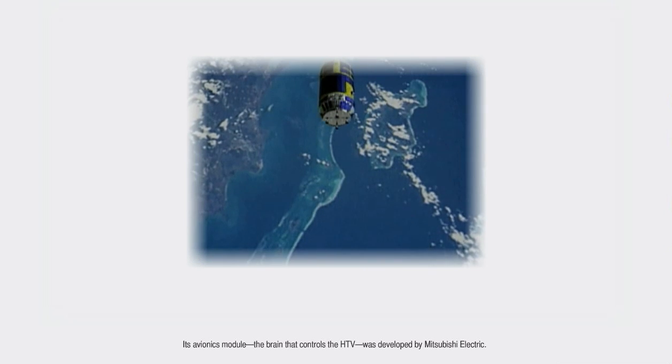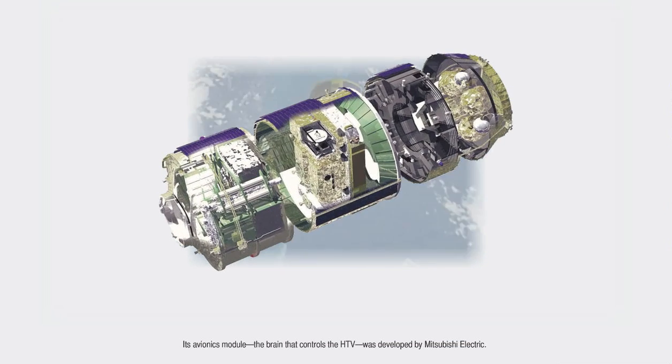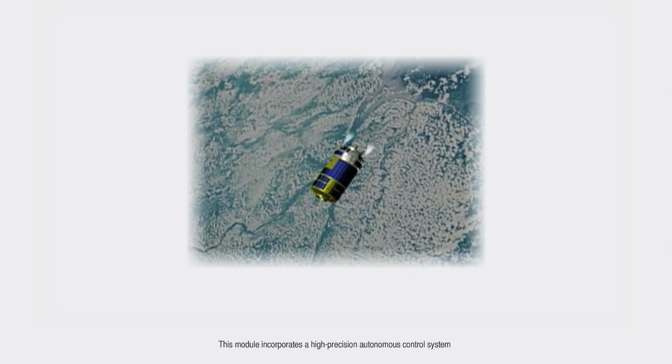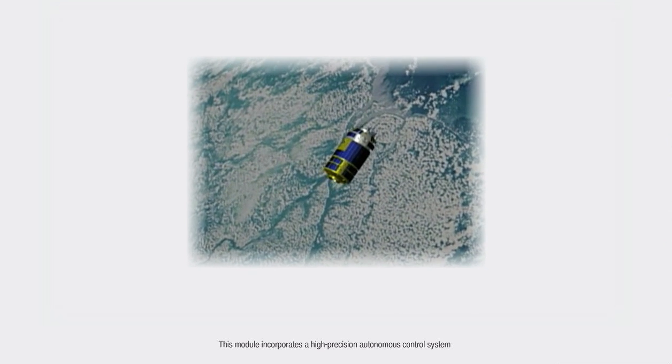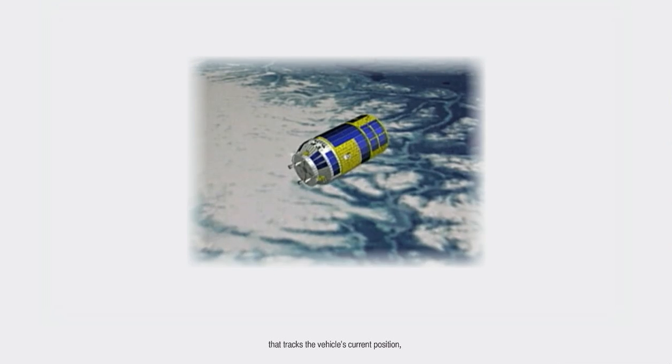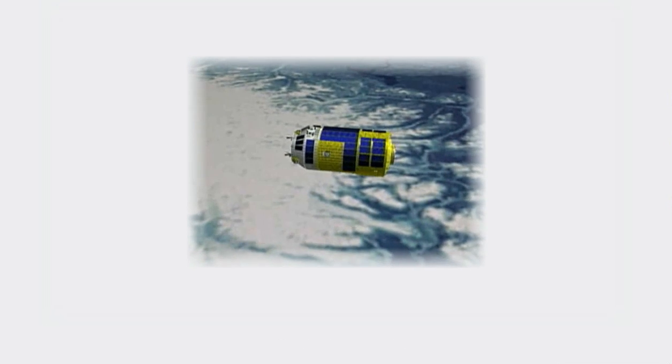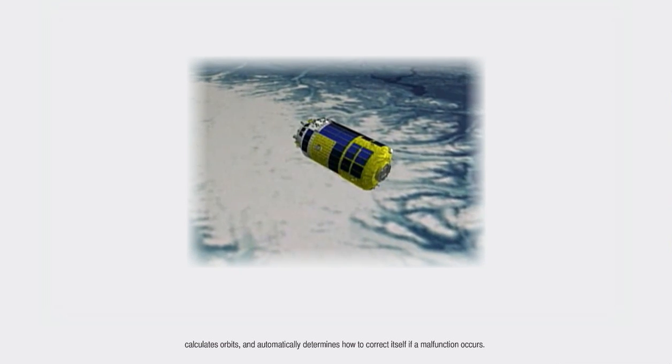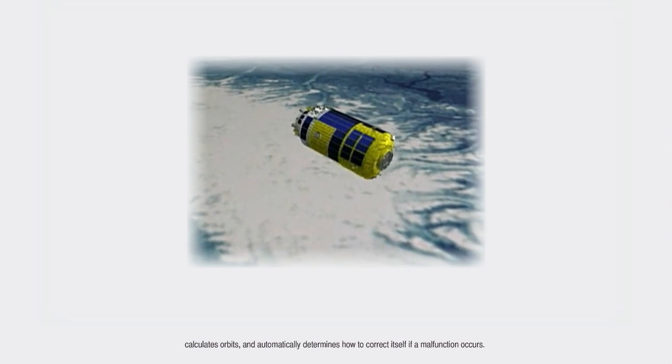Its avionics module, the brain that controls the HTV, was developed by Mitsubishi Electric. This module incorporates a high-precision autonomous control system that tracks the vehicle's current position, calculates orbits, and automatically determines how to correct itself if a malfunction occurs.